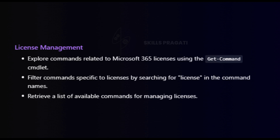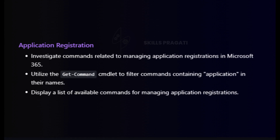After exploring license commands, we will proceed further and perform Task 3: investigate application registration commands. Here we will dive into the world of application registrations in Microsoft 365. Leveraging the get command, we'll strategically filter commands containing 'application' in their names. The outcome will be a detailed list of available commands, providing administrators with the tools they need to effectively manage application registrations.